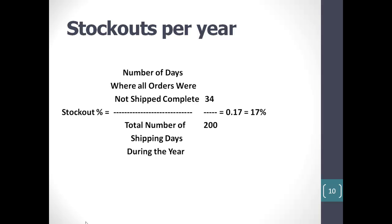For example, if we had 34 days where orders were not shipped complete divided by 200 shipping days, our fill rate availability is 17%. This indicates that you were unable to send out all orders 17% of the time. Or, stated more positively, you were able to send out orders complete 83% of the time.